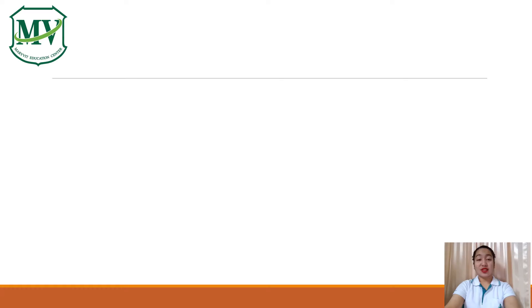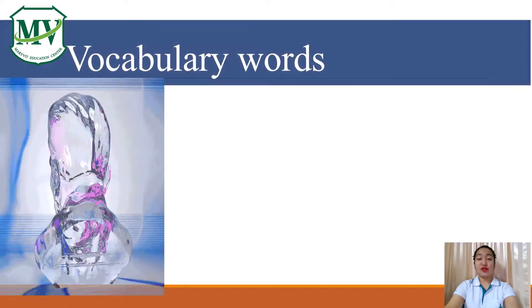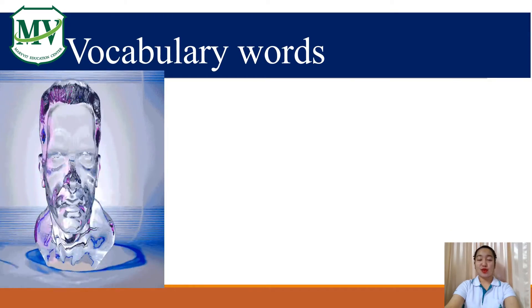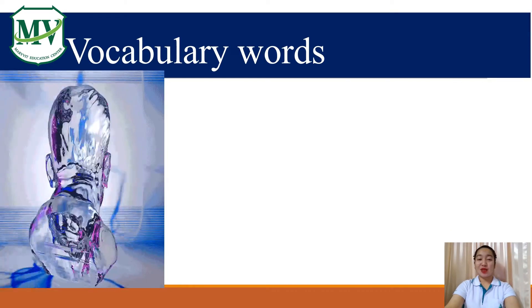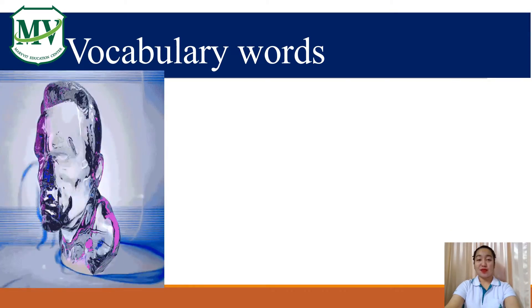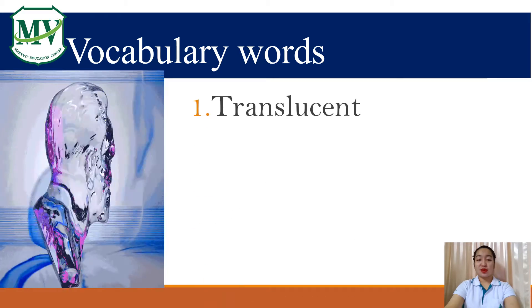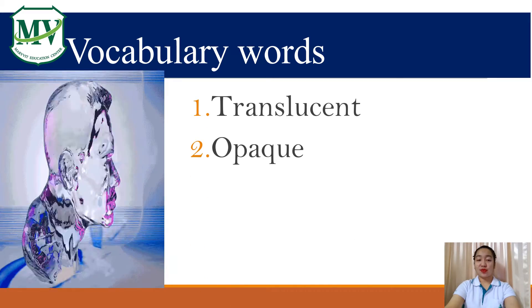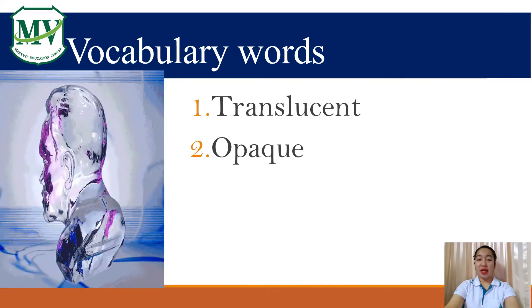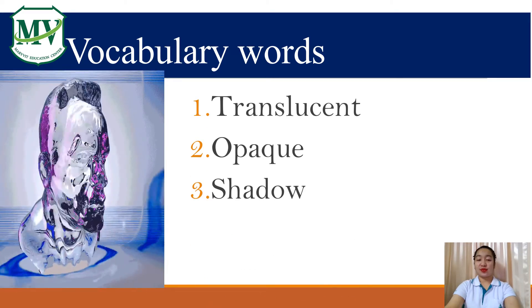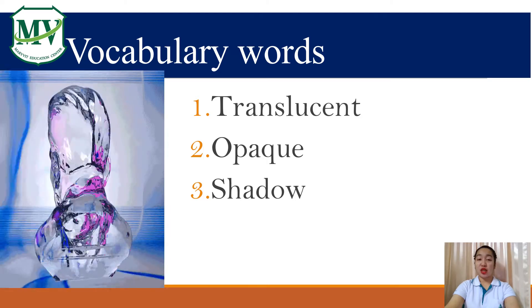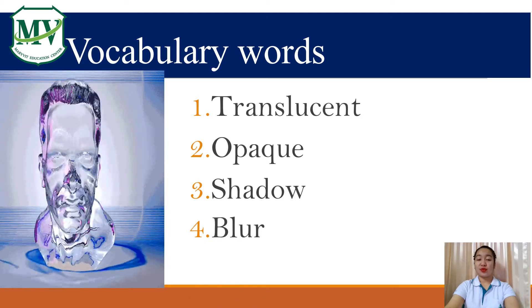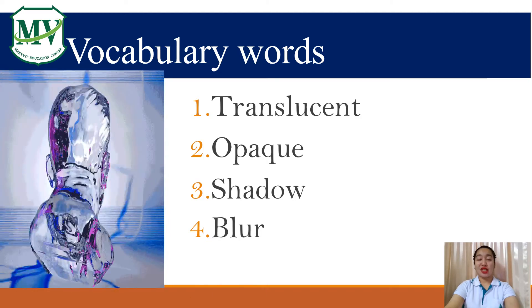Before we start, let us read first our vocabulary words. Please repeat after me: translucent, opaque, shadow, blur.